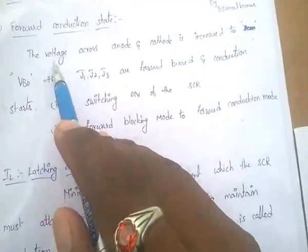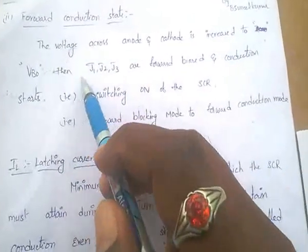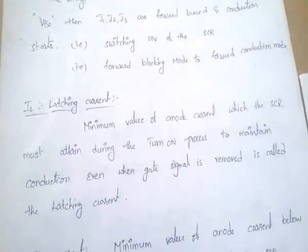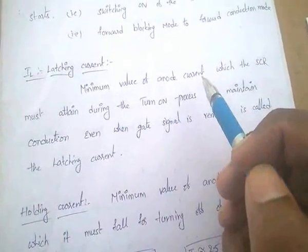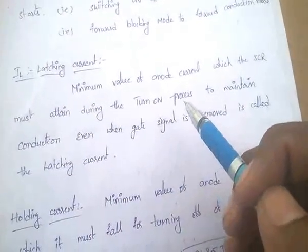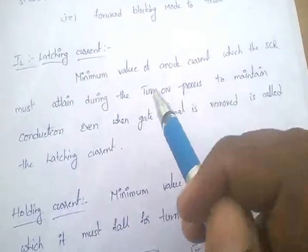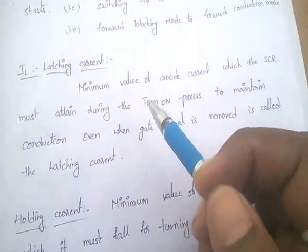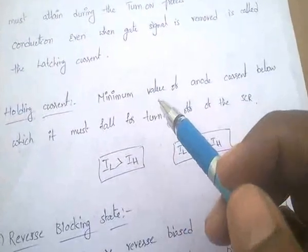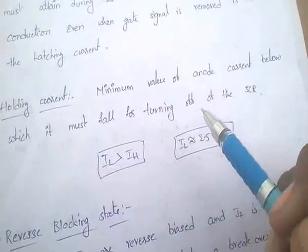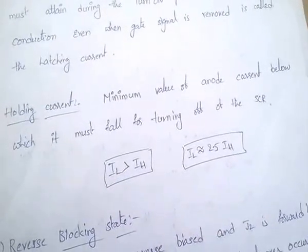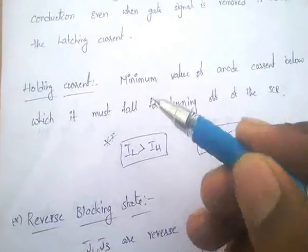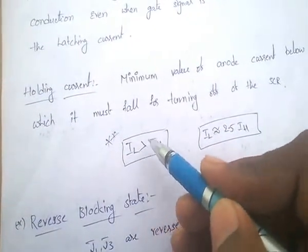In the forward conduction state, when voltage across anode and cathode reaches VBO, junctions J1, J2, J3 are all forward biased and conduction starts — this is the switching on of the thyristor. Latching current (IL) is the minimum value of anode current which the SCR must attain during turn-on to maintain conduction even when the gate signal is removed. Holding current (IH) is the minimum value of anode current below which the thyristor turns off.